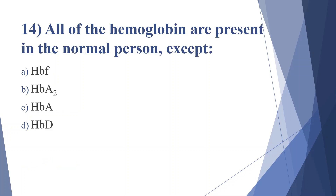Fourteenth question: all of the following hemoglobins are present in a normal person except — option A: HbF, option B: HbA2, option C: HbA, option D: HbD. Answer is option D, HbD.